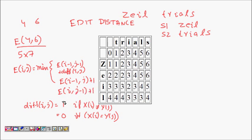e(i, j) is the minimum number of operations. The operations available are: delete a character from 'zeal', insert one character, or replace one character. All operations are of equal cost.